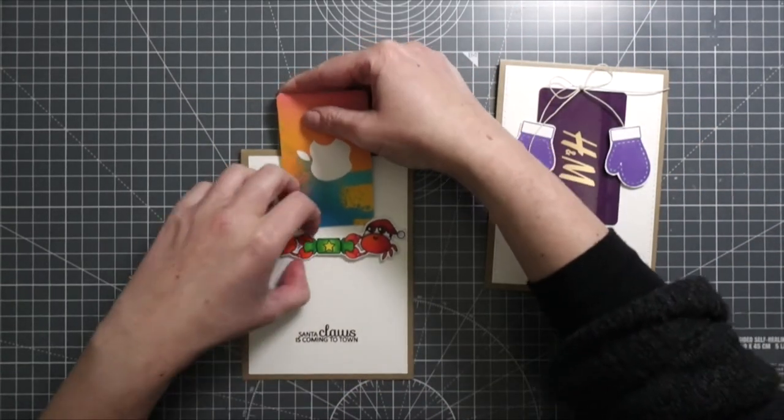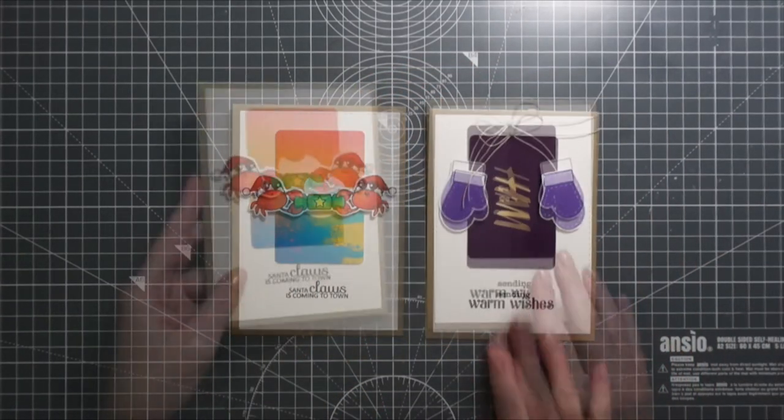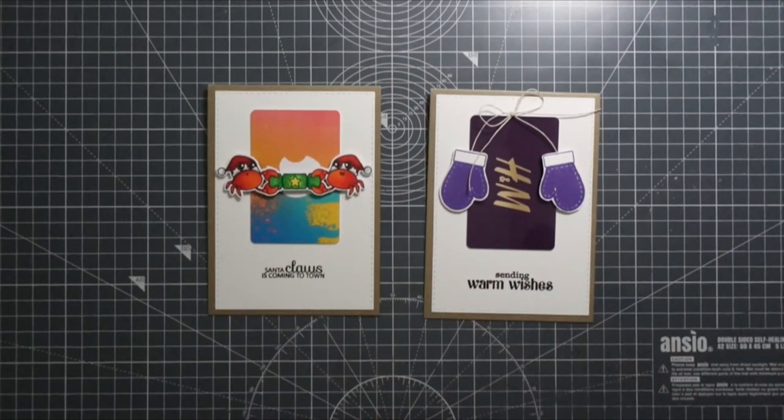Then I used my gift cards and slid them in. For the purple mittens I had the purple card from H&M, and for the card with the crabs I fished out my old iTunes gift card. I think it matches perfectly.